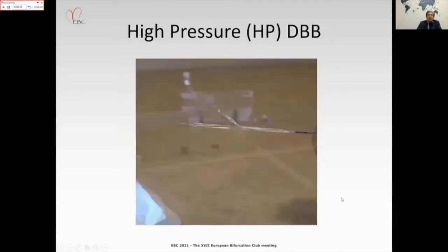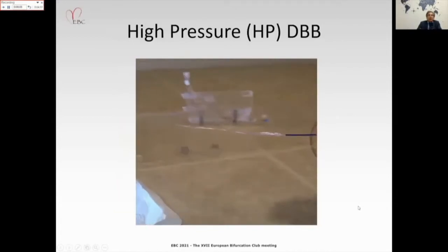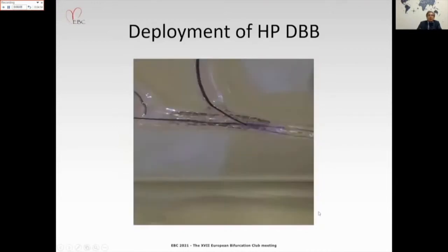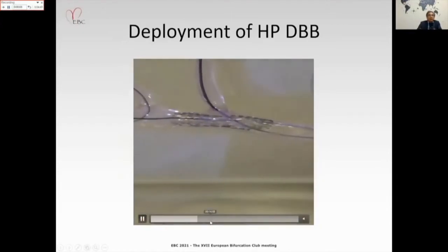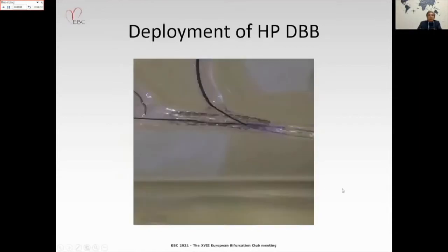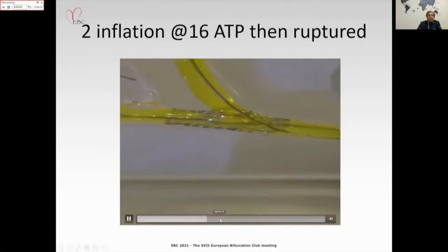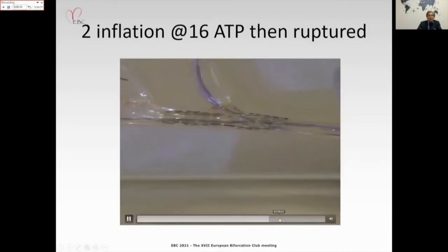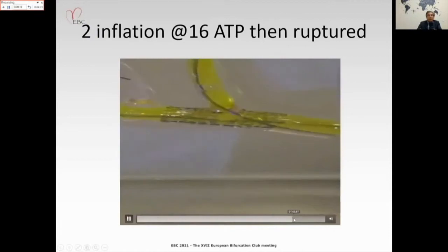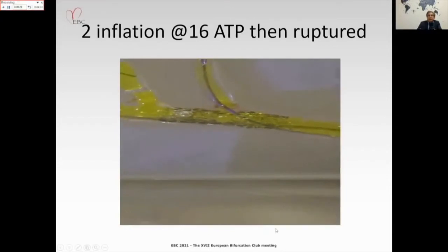This is the bifurcated high-pressure balloon. Advancing it was done with ease. Inflating with yellow dye to make it clearer — inflating all the way to 16 atmospheres to open the proximal part — upon deflation recoil occurred, indicating high recoil of the silicon. Re-inflating caused rupture, visible by yellow dye appearing in the other branch.